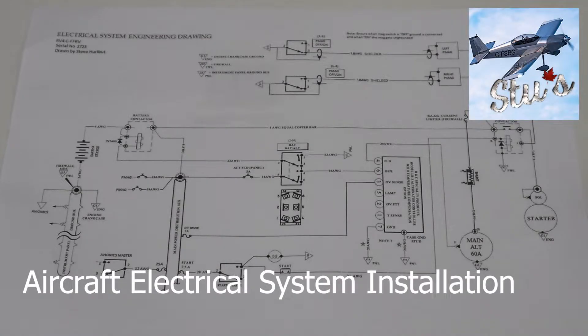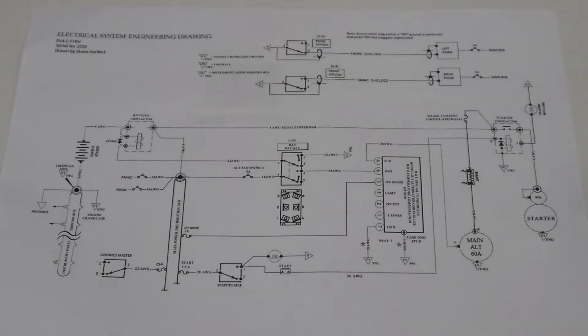Today we're going to go over some of the basic components of an electrical system in an aircraft. I'll show you the installation of the master relay, starter relay, current limiter, shunts, fuse blocks, and a grounding block to start the basics of the electrical system in the RV-4. So I'll show you how we did that.